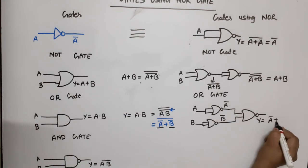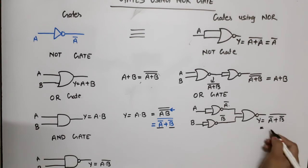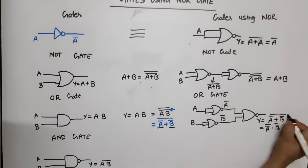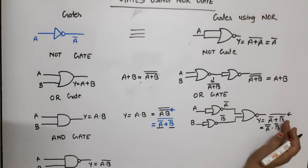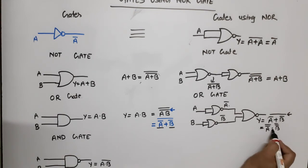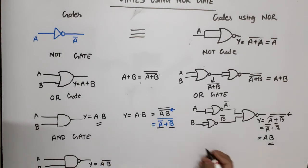This can be written as A bar bar dot B bar bar by De Morgan's theorem, which equals A dot B. So this is AND gate using NOR only.